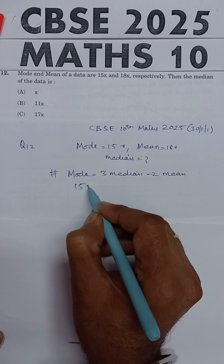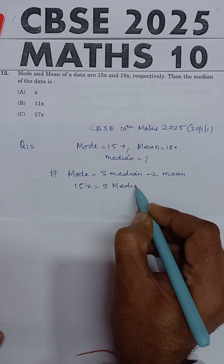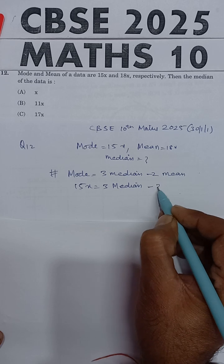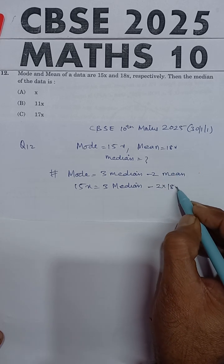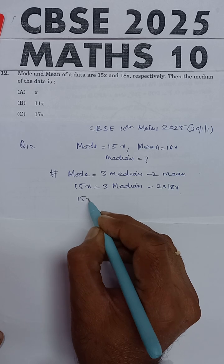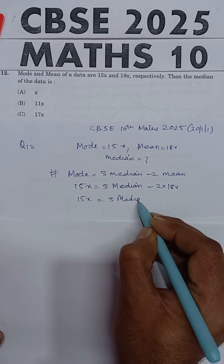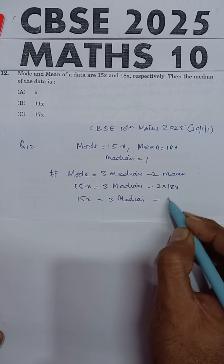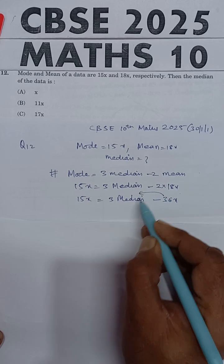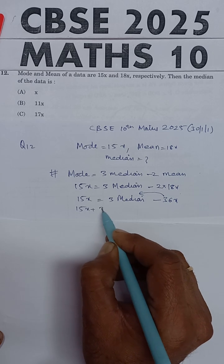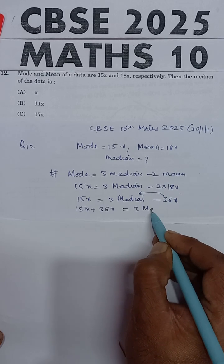Substituting the values: Mode is 15x = 3 times the median minus 2 times the mean (18x). So 15x = 3(Median) − 36x. Transferring the median term: 15x + 36x = 3 × Median.